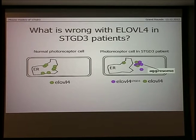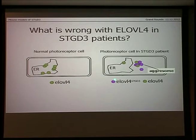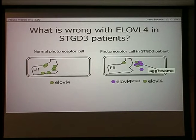Normally we have ELOVL4 sitting in the membrane of the ER making VLC PUFAs for the photoreceptor cells. In a patient, the mutated version of ELOVL4 clumps together with the healthy allele, the healthy version of the protein, and together they leave the ER forming clumps which are actually called agresomes.